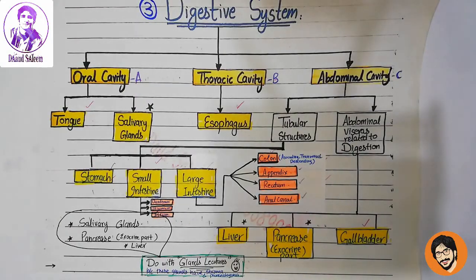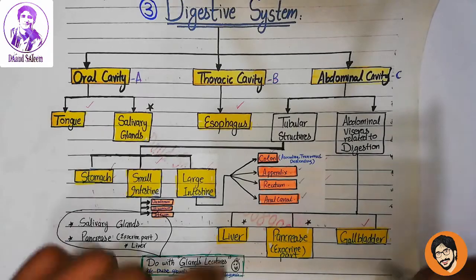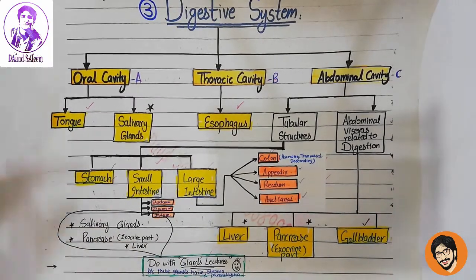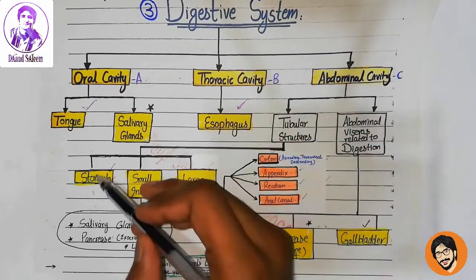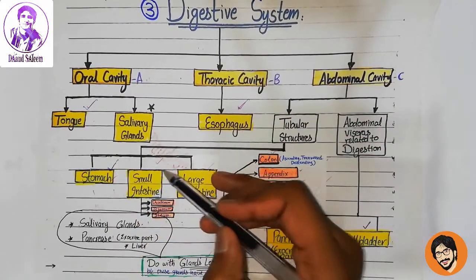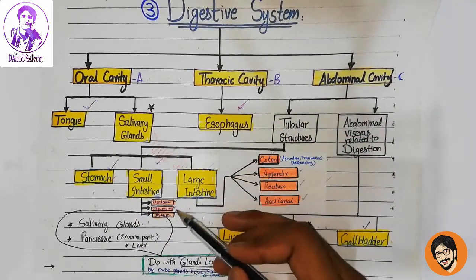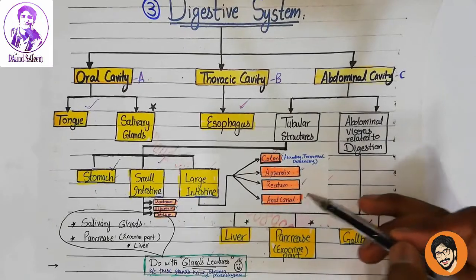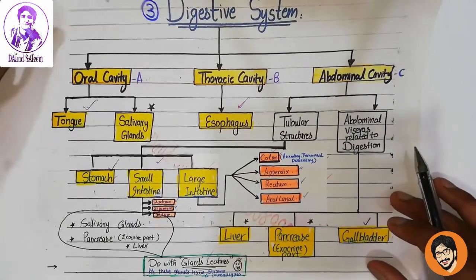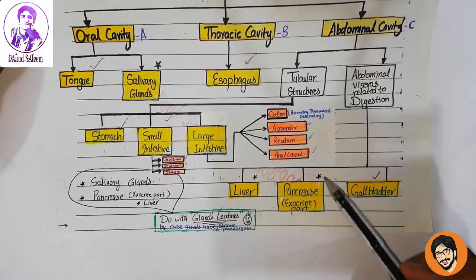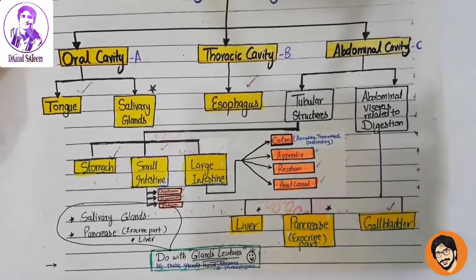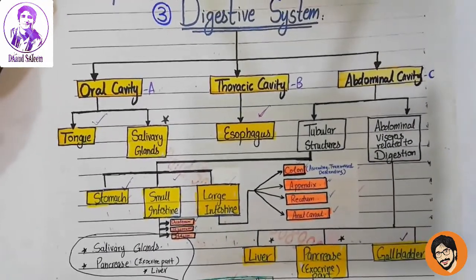Assalamualaikum, let's move on to our next lecture about the gallbladder. We have done tongue, esophagus, stomach, small intestine, large intestine and its subparts, and gallbladder. The others are salivary glands, liver, and pancreas — we will do a lecture with those glands. So don't panic. Let's move on to the gallbladder.